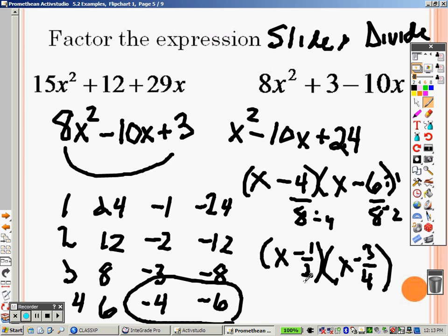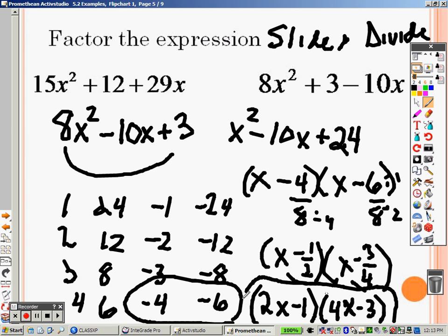Remember, we can't have fractions. So I move the 2 out. So that gives me a 2x minus 1. And I move the 4 out, because we can't have fractions. So that gives me a 4x minus 3. And there is our two factors in parentheses.